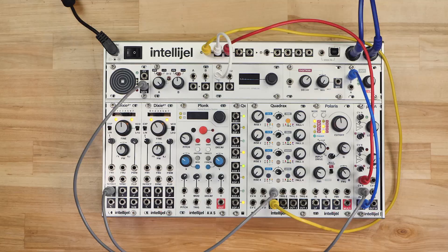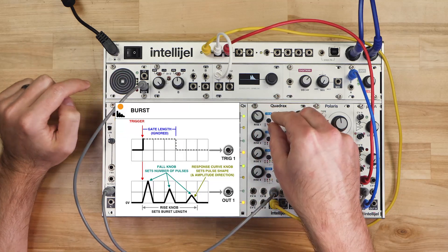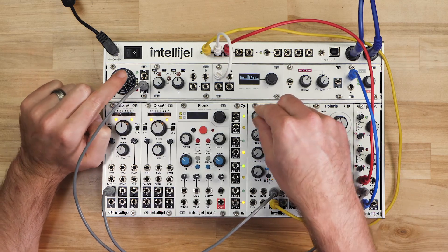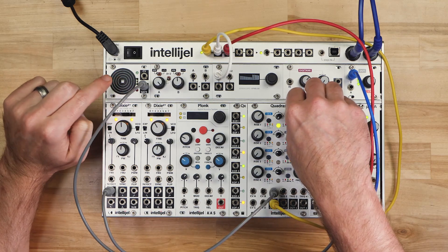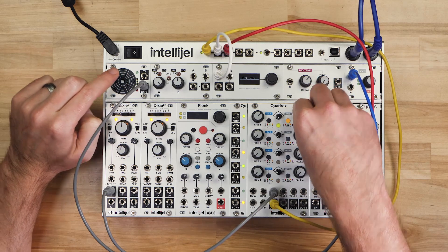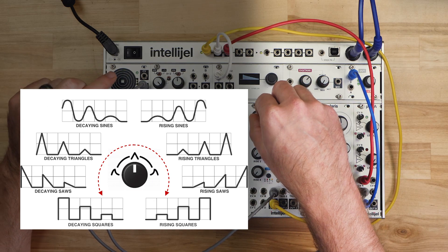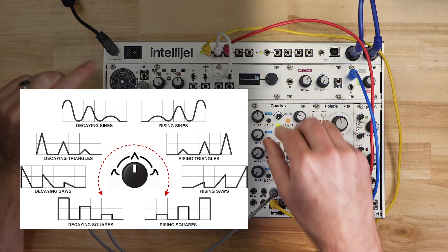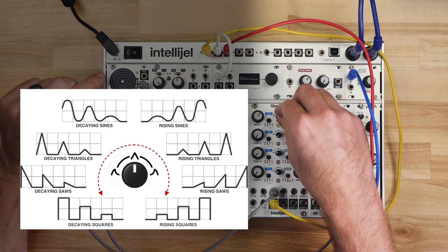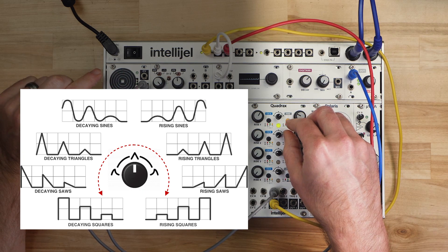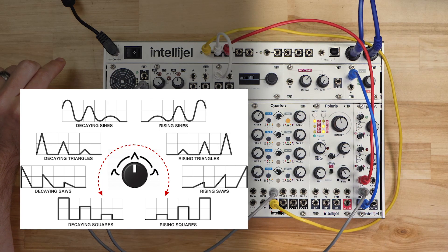Next up is Burst Mode, indicated by the button lighting up yellow. In this mode, the channel will output a burst made up of a series of pulses. The rise knob now determines the total length of time these bursts will take, and the fall knob sets how many pulses will take place within the burst. Faster burst times will cluster the pulses closer together, and the shape knob now sweeps between different shapes of pulses, but also whether the burst rises or falls. With the shape knob counterclockwise, falling bursts are created, starting with square pulses, then saws, triangles, and sines. Moving the knob clockwise of center makes the bursts rise, with pulses mirroring the same shapes of sines, triangles, saws, and squares when fully clockwise.